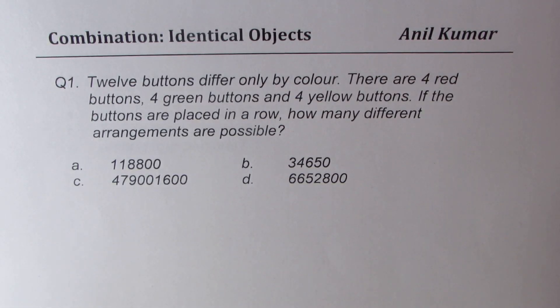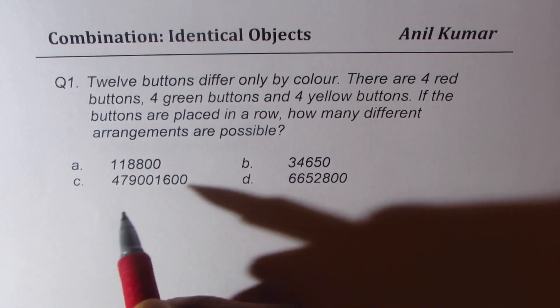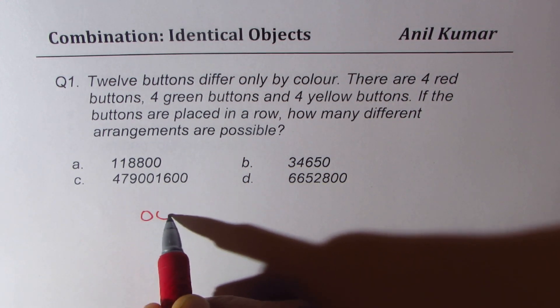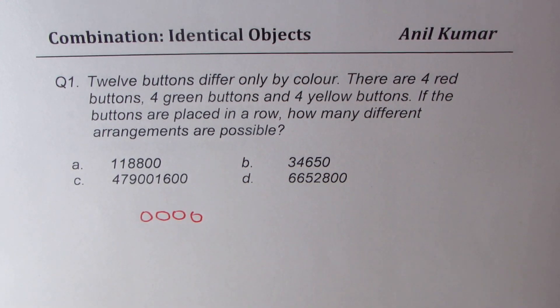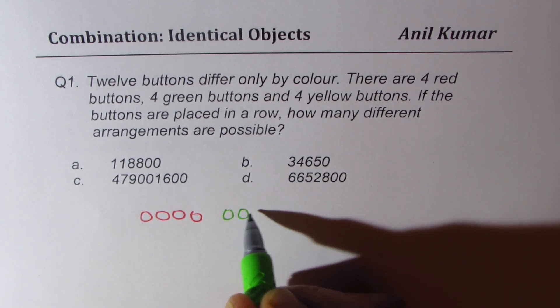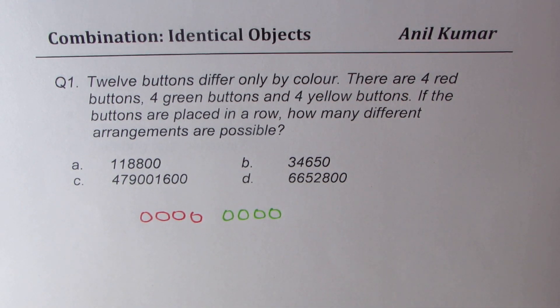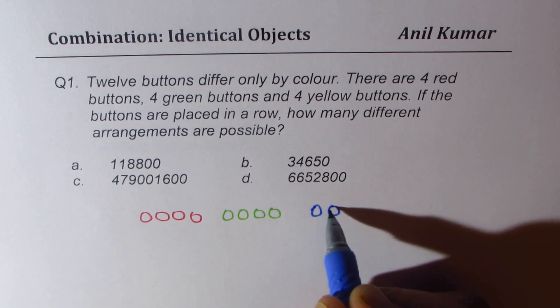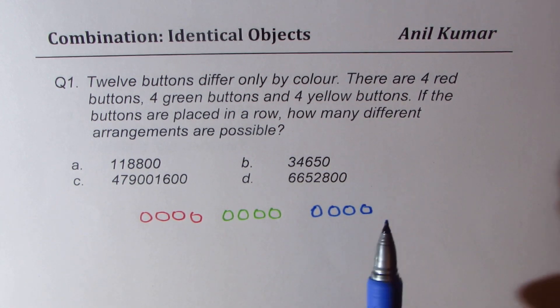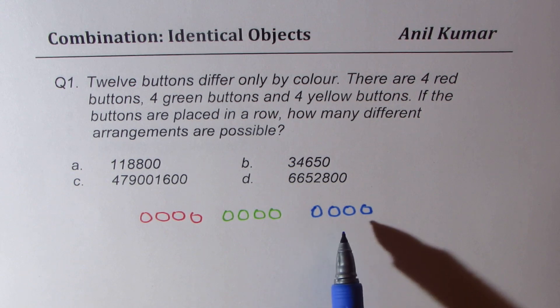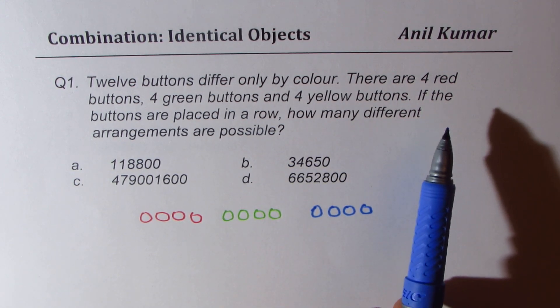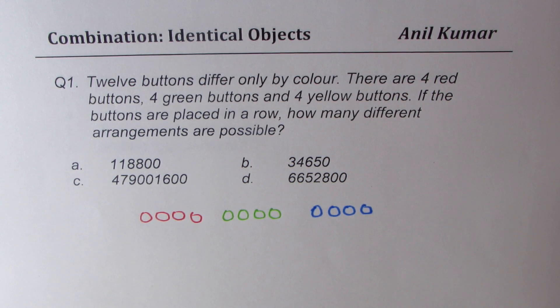Question number one. We are talking about twelve buttons which differ only by color. There are four of each kind. So we have four red, for example, and we have four green and four yellow. Now they are exactly similar except for the color. Now you need to find how many different arrangements are possible.